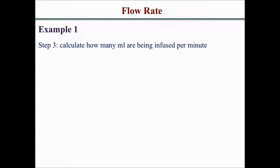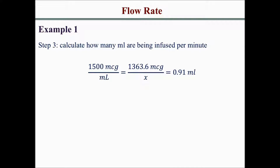Now that you have the micrograms, you want to convert micrograms into mL to find out how many mL are being infused per minute. You do this by setting up a proportion. Since the concentration of the dopamine solution is 1,500 micrograms per mL, you set that equal to the 1,363.6 micrograms the patient is receiving per minute, and that gives you the mLs. Every minute the patient is receiving 0.91 mL of dopamine solution.